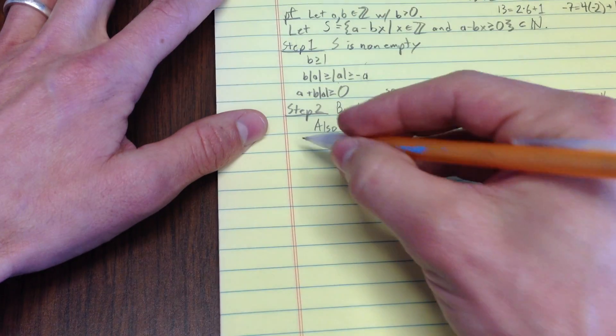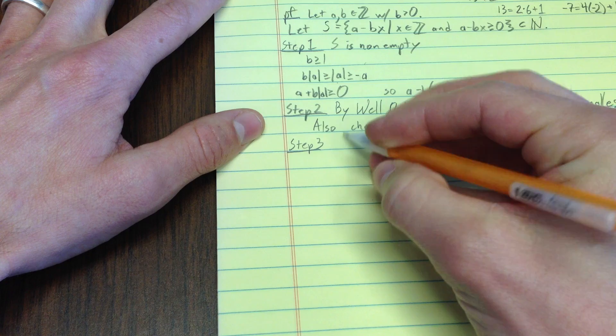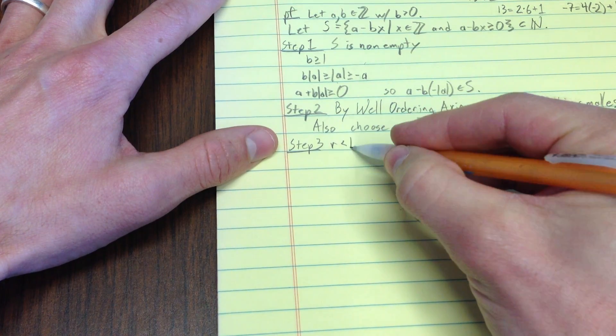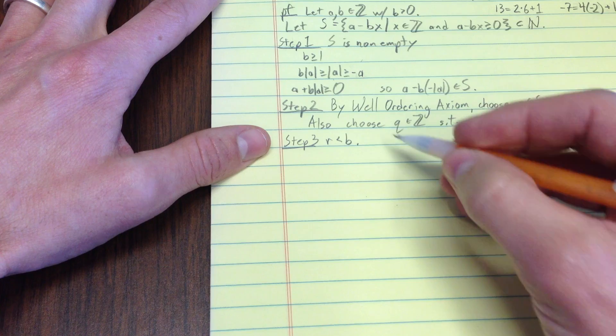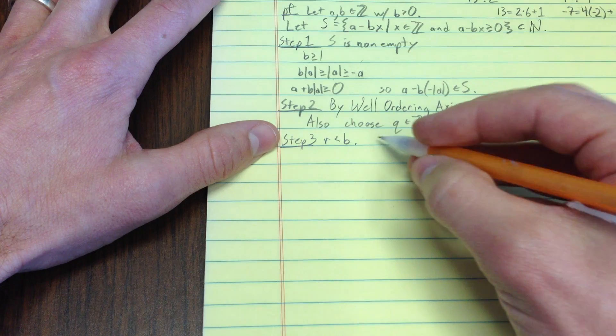Notice that I've got this condition just simply by being inside s. That's a list of non-negative things. How do I get this condition? So, step three is just showing that r is less than b.